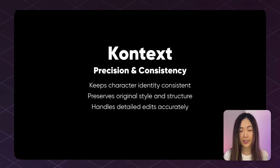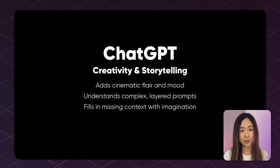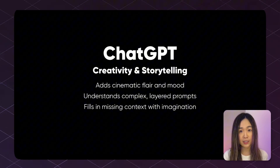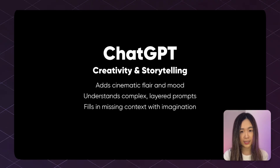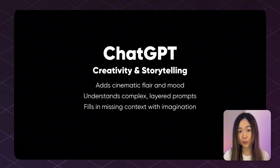So what did we learn? Context is a precision tool — it stays true to your character, keeps the style more consistent, and handles detailed edits like a surgeon. ChatGPT on the other hand brings more creativity and storytelling to the image: it fills in the blanks, adds its flair, and understands what you're going for even when you didn't spell out everything in your prompt. Both have their strengths, and with Design you don't have to choose. Try it out yourself with the link below.